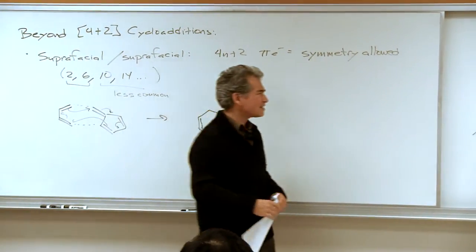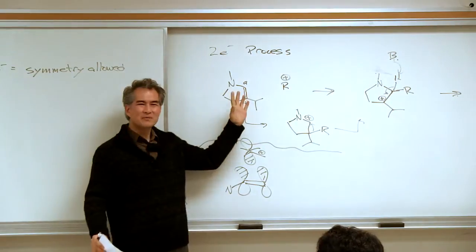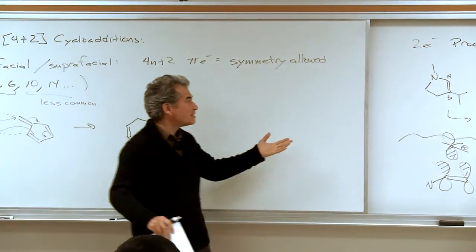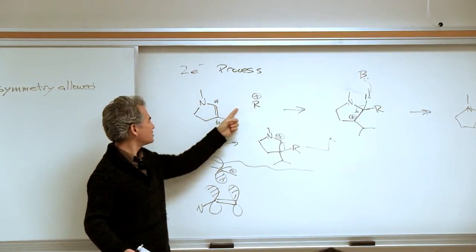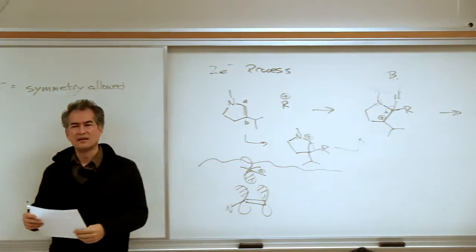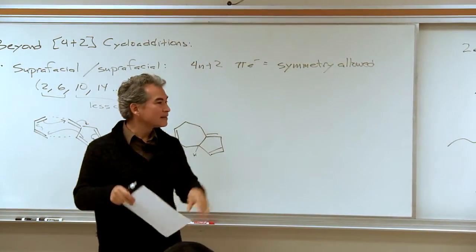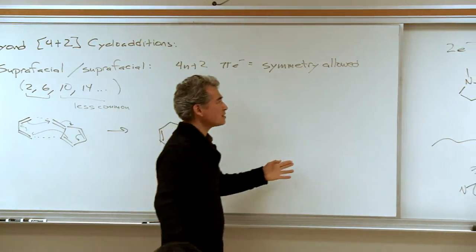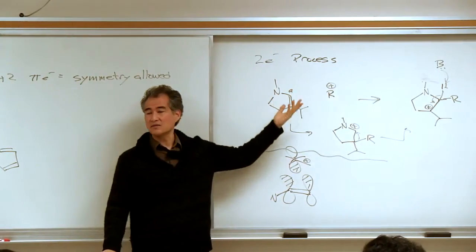Any electrophile — whether it's Br2 or a carbocation — that comes down and interacts with this has to interact simultaneously with those two carbons. There is no way to get close to one carbon without also being close to the other. There will be a bonding interaction as a carbocation comes down and lands on top of these carbons. The transition states for simple addition to A versus addition to B and migration to A are very similar in energy.